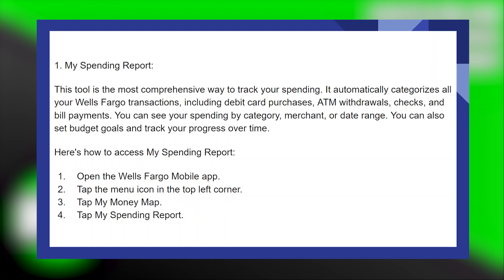Here's how to access My Spending Report. Open the Wells Fargo mobile application. Tap the menu icon in the top left corner. Then tap on My Money Map. Now tap on My Spending Report.